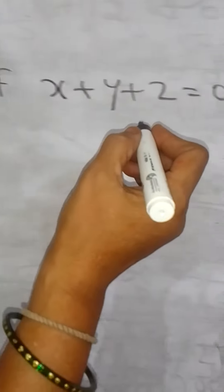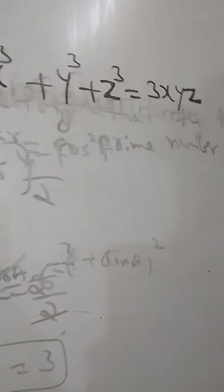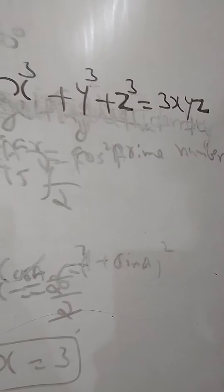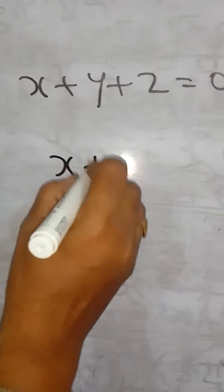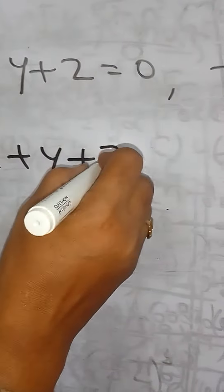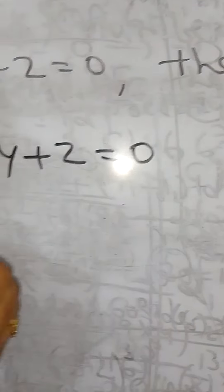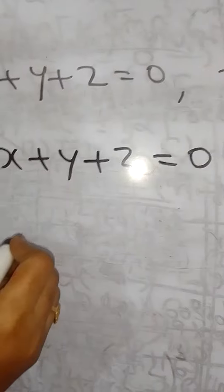If x plus y plus z is equal to 0, then prove that x cube plus y cube plus z cube is equal to 3xyz. The condition given is x plus y plus z is equal to 0.